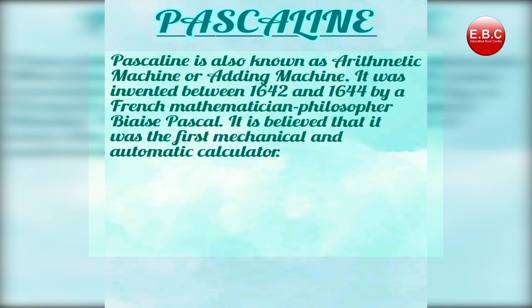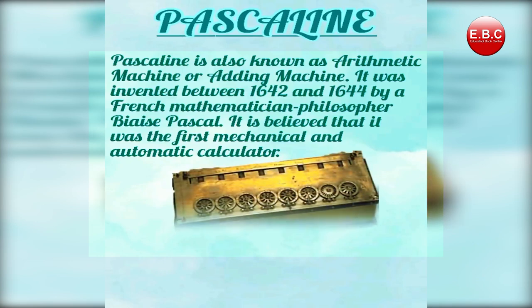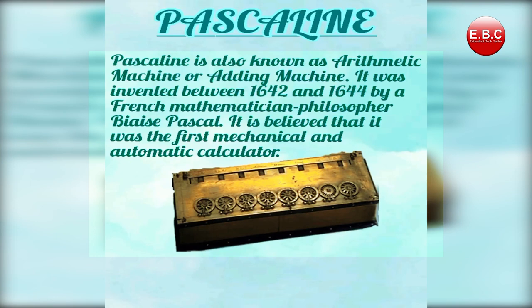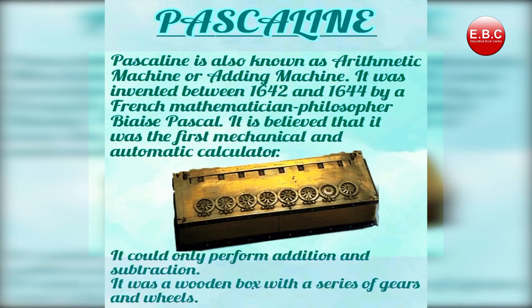Next is Pascaline. Pascaline is also known as arithmetic machine or adding machine. It was invented between 1642 and 1644 by French mathematician and philosopher Blaise Pascal. It is believed that it was the first mechanical and automatic calculator. It could only perform addition and subtraction. It was a wooden box with a series of gears and wheels. Basically, Pascaline hai kya? Yeh duniya ka pahla mechanical calculator tha.